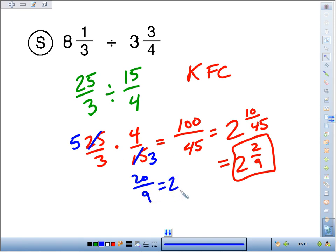And then you end up with 5 times 4 is 20, over 3 times 3 is 9. How many times does 9 go into 20? Twice. That makes 18. 18 to 20 makes a remainder of 2 2/9.